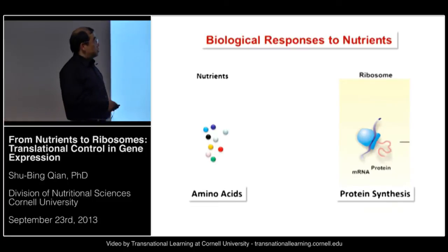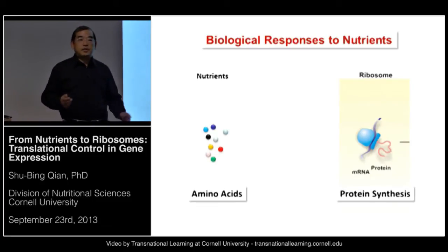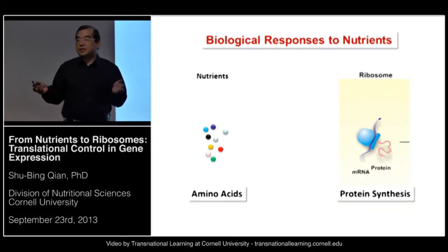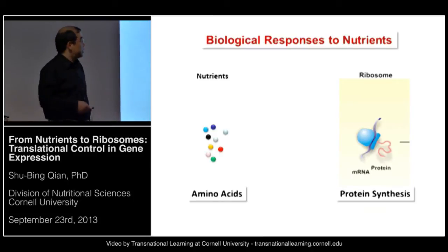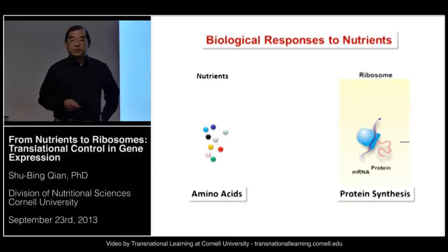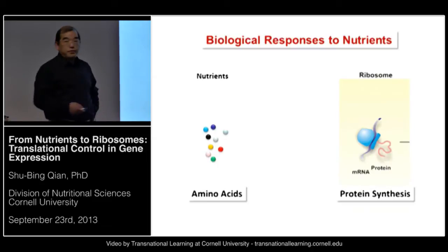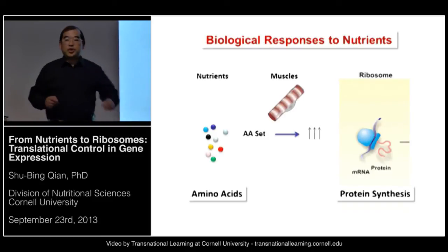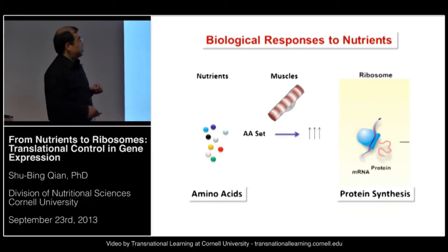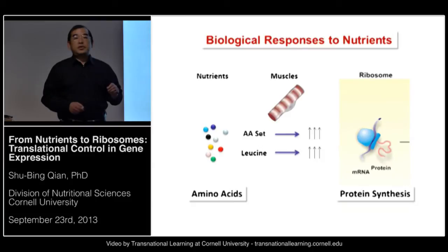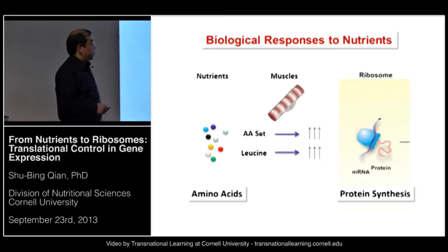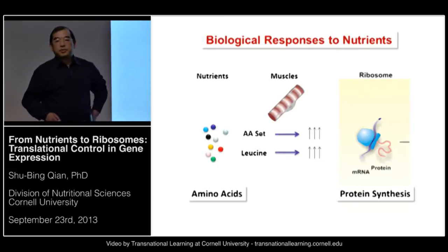My lab has a long-standing interest in protein synthesis, the fundamental biological process in response to the presence of nutrients. When we talk about nutrients, we mainly refer to amino acids — the building blocks of polypeptide chains. It's not surprising that translation initiates only when nutrients are present at sufficient levels. An experiment done about half a century ago showed that adding amino acids to isolated tissues like muscle dramatically enhances protein synthesis. Interestingly, adding leucine alone is able to trigger protein synthesis to a similar extent as the whole set of amino acids, strongly suggesting a signaling pathway mediates communication between nutrients and protein synthesis.